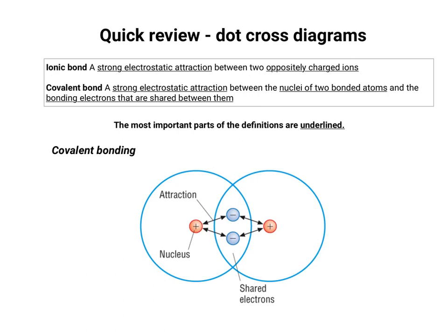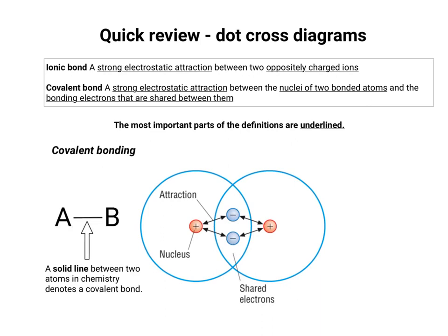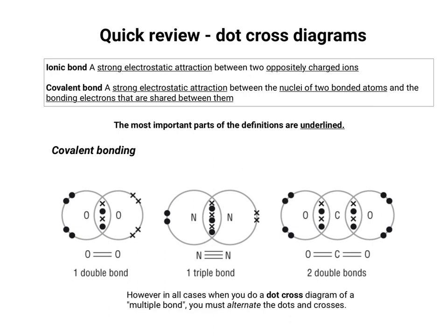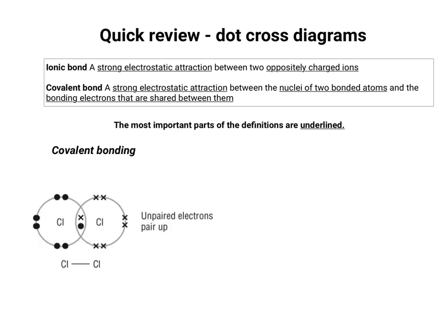Moving on to covalent bonding — a strong electrostatic attraction between the nuclei of two bonded atoms and the bonding electrons that are shared between them. You can also draw a covalent bond between two atoms by drawing a solid line; two solid lines between two atoms gives a double covalent bond. Multiple bonds are written the same way, but it's important that you alternate the dots and crosses when you do multiple bonds. As always, unpaired electrons pair up, whether it's a single, double, or triple bond.